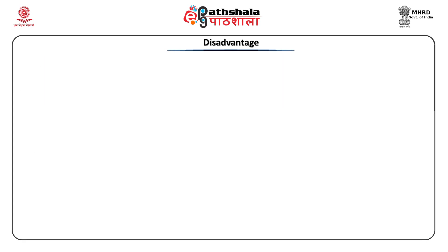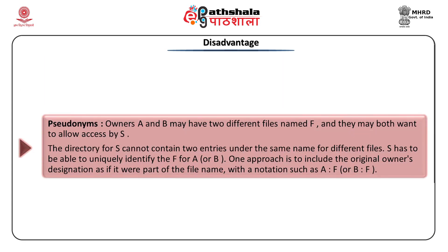The third problem is pseudonyms. Owners A and B may each have different files named F and may both want to allow access by user S. The directory for S cannot contain two entries under the same name for different files. Therefore S has to be able to uniquely identify F for A or F for B. One approach is to use a notation such as A:F for the file F of A, and B:F for the file F of B.